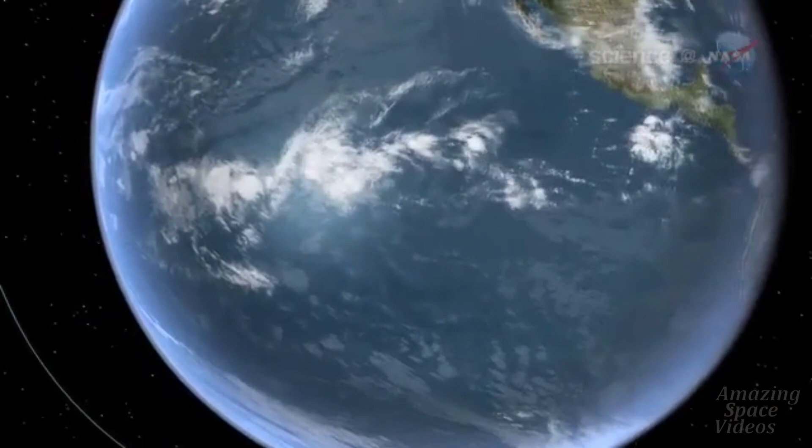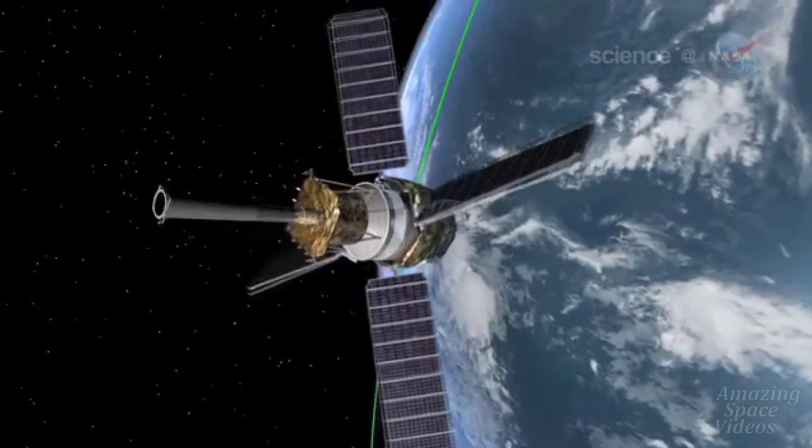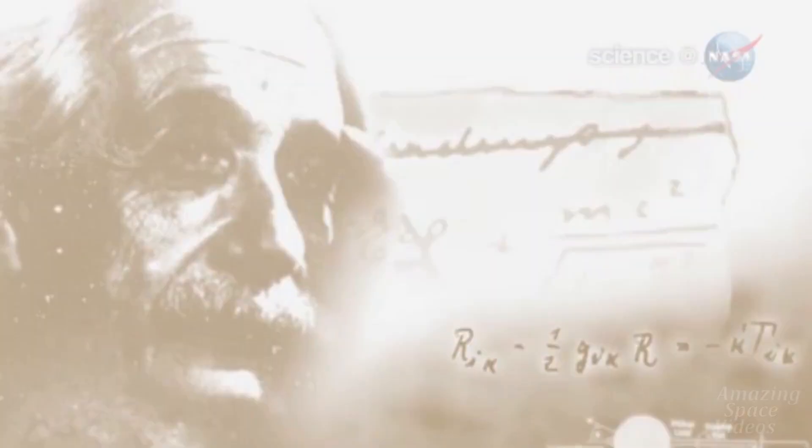Pulling off the experiment was a big challenge. But after a year of data taking and nearly five years of analysis, the Gravity Probe B scientists appear to have done it. The gyros precessed, the vortex is real, and we are in it. Einstein was right again.